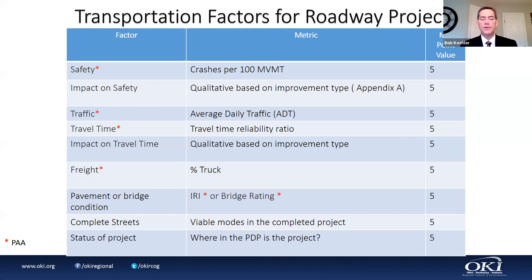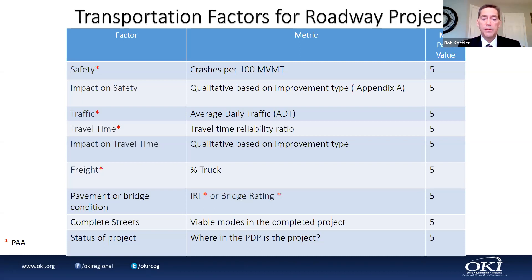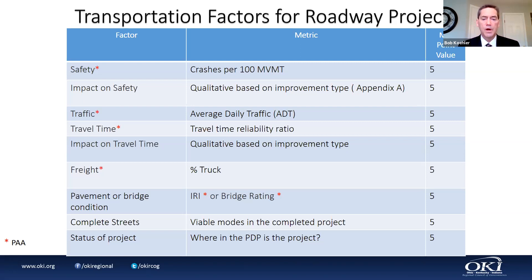The freight measure is percent truck, available through the PAA. For pavement or bridge condition — if your project includes a section of road with a bridge, we'll take the worst-case scenario. If the bridge is in terrible shape but the roadway is okay, we'll allow the bridge rating to carry the score. The measure for pavement is IRI. If we don't have IRI and you have a pavement condition rating (PCR), we'll accept that — it gives us a measure of how the pavement is actually performing.